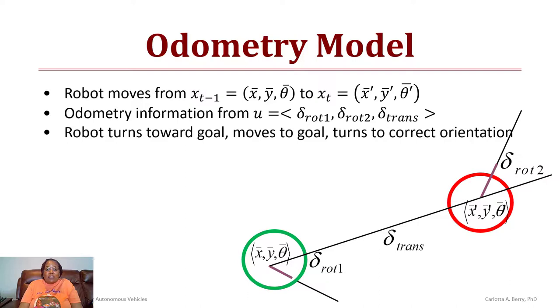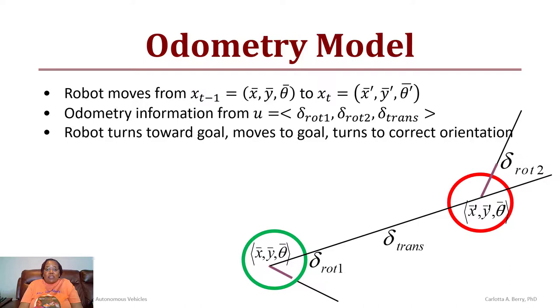We have x bar, y bar, theta bar, and then the robot rotates by delta_rot1, then it translates by delta_trans, and then it's at its final position and it rotates once again to correct the orientation. The formulas that we use: the first one is the translation which is just the Euclidean distance, so it's the square root of (x bar prime minus x bar) squared plus (y bar prime minus y bar) squared. And it's the arc tangent of (y bar minus y) / (x bar minus x) minus theta bar for the initial rotation. For the final rotation it would be the desired rotation minus the current rotation minus how much it rotated for delta_rot1.